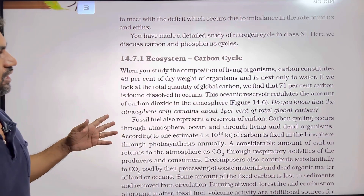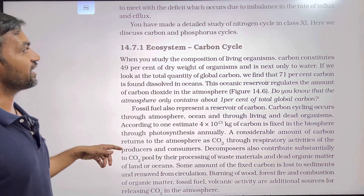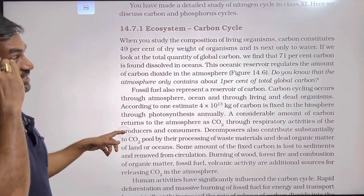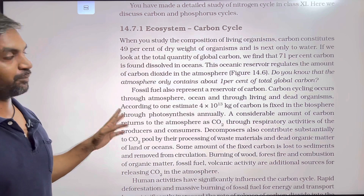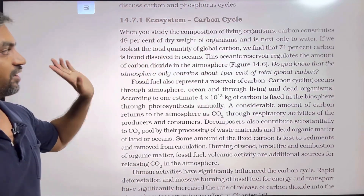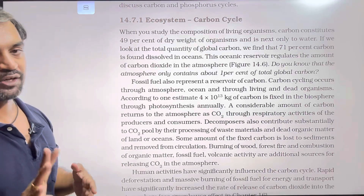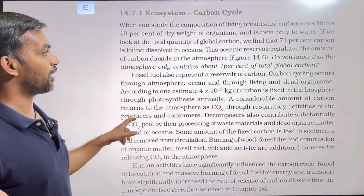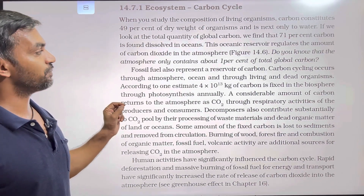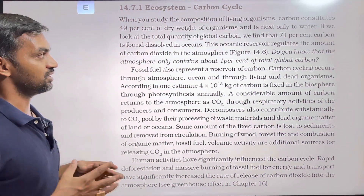Detailed study of the nitrogen cycle was done in class 11, including atmospheric nitrogen fixation by Rhizobium bacteria. Here we discuss the carbon and phosphorus cycle. Carbon constitutes 49% of the dry weight of an organism and is next only to water. If we look at the total quantity of global carbon, we find that 71% of carbon is found dissolved in the ocean.